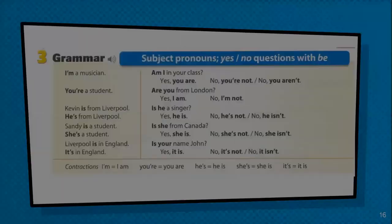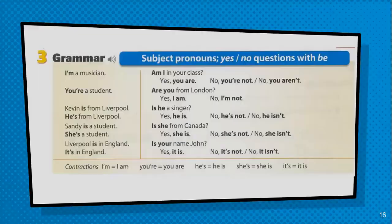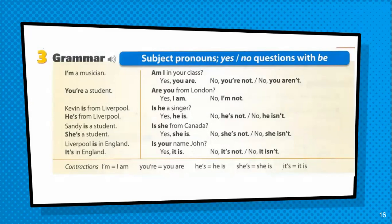Grammar in use: yes/no questions with 'to be'. I am a musician. In question form: Am I in your class? Yes, you are. No, you are not. No, you aren't. You are a student. Are you from London? Yes, I am. No, I'm not. Kevin is from Liverpool. Is he a singer? Yes, he is. No, he isn't.